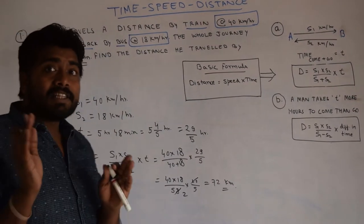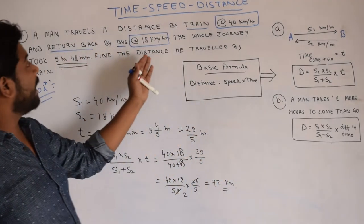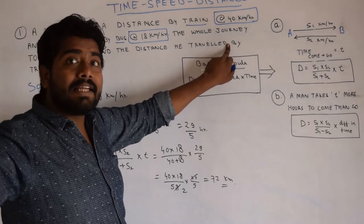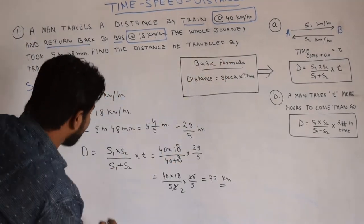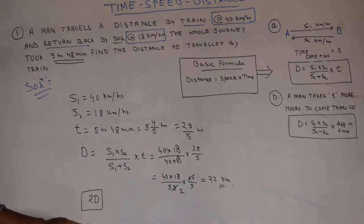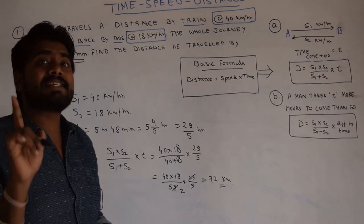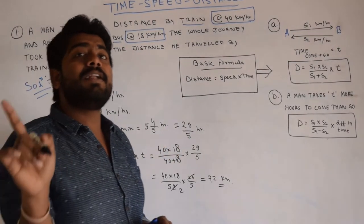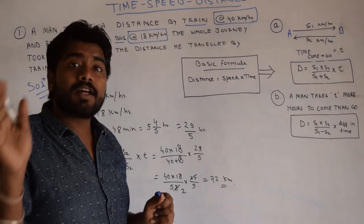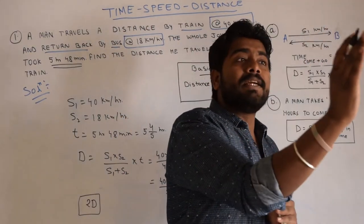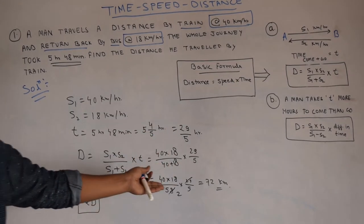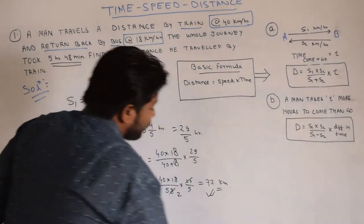So 72 kilometers is the distance between the two points — the distance traveled by train on one side. If the question asks for the distance traveled by bus, it is the same 72 km since both sides cover equal distance. If the question asks for the total distance traveled in the entire journey (going and returning), that would be 2D = 144 kilometers. But here the answer is 72 kilometers.